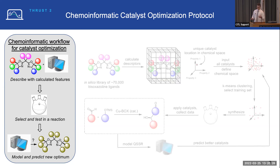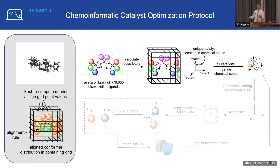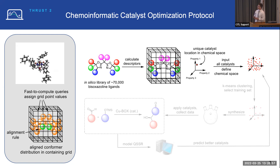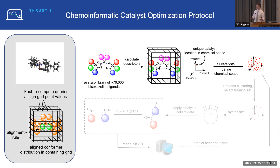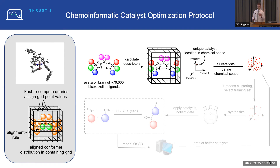I'll illustrate this for the BOX library — a very large library of ligands, 70,000 in our case. We use conformer-dependent grid-based descriptors to capture the full information of a conformer ensemble accessible to a given catalyst. You're seeing a conformer distribution for one of our BOX catalysts. We align these along the chelating oxazoline nitrogen atoms, place them in a grid, and calculate grid point values. This is a comparative molecular field-type method, but we use simple queries to assess steric and electronic properties rather than interaction probes at each grid point.